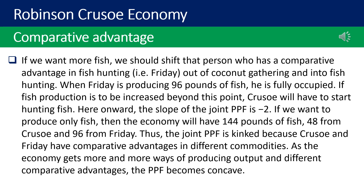When Friday is producing 96 pounds of fish, he is fully occupied. If fish production is to be increased beyond this point, Crusoe will have to start hunting fish, and from this point onward the slope of the joint PPF is −2. If only fish is produced, the economy will have 144 pounds of fish: 48 from Crusoe and 96 from Friday. Thus the joint PPF is kinked because Crusoe and Friday have comparative advantages in different commodities. As the economy gains more production methods and different comparative advantages, the PPF becomes concave.